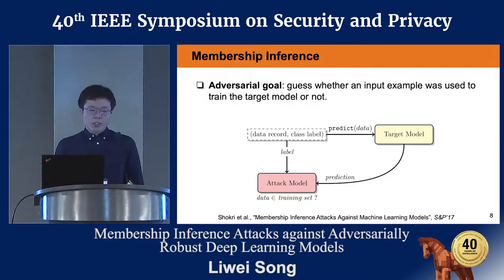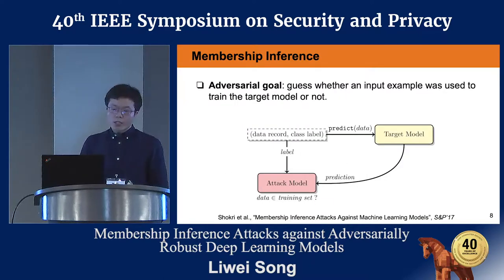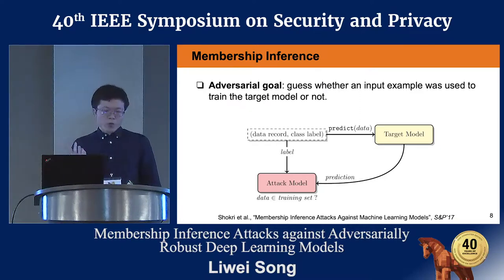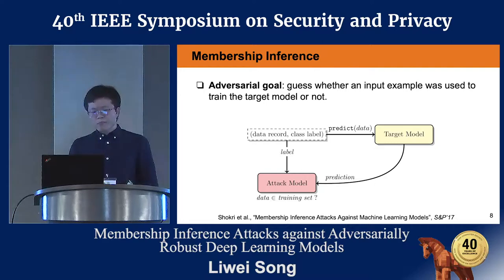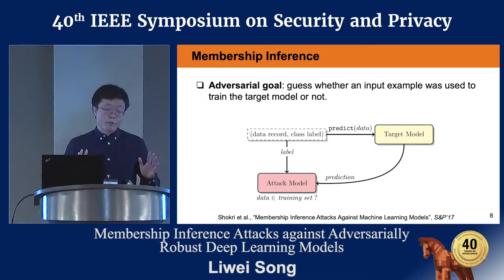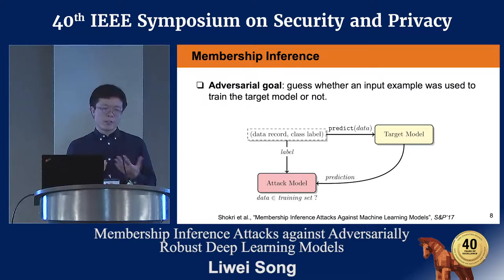For the membership inference attack, the setting is: given the target model and some inputs, the adversary tries to guess whether those inputs were used to train the target model. This is a privacy issue because membership can reveal sensitive information about individuals — for example, if your record is in a hospital's dataset, it means you were once a patient at that hospital.